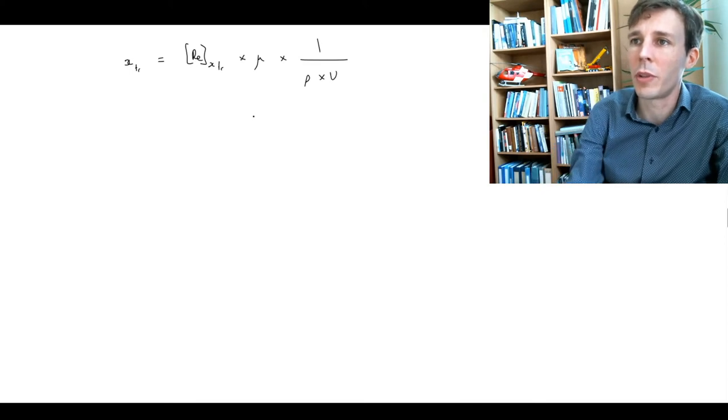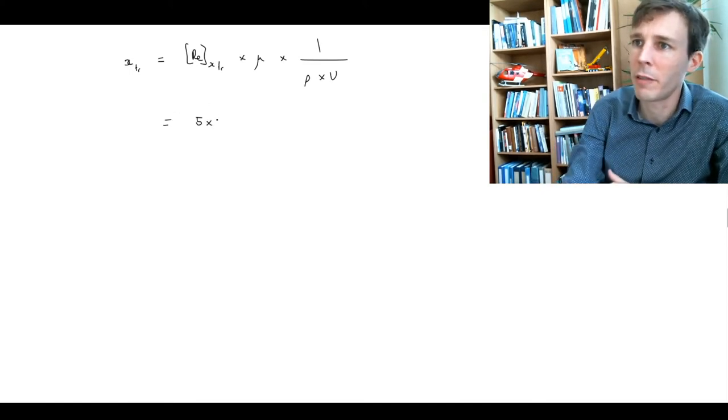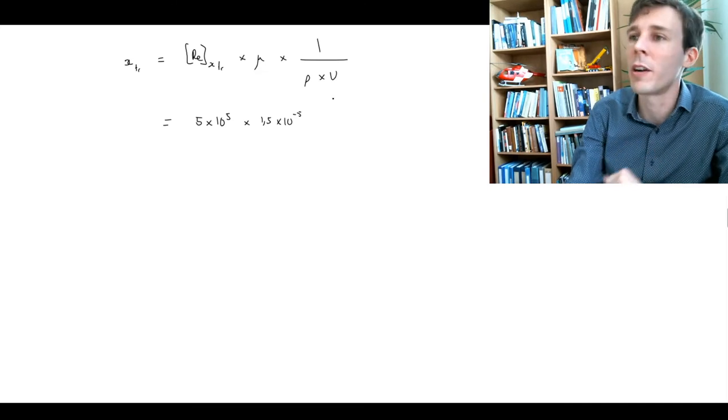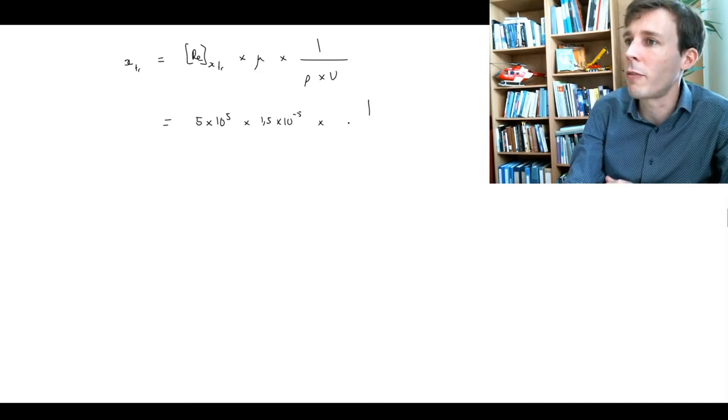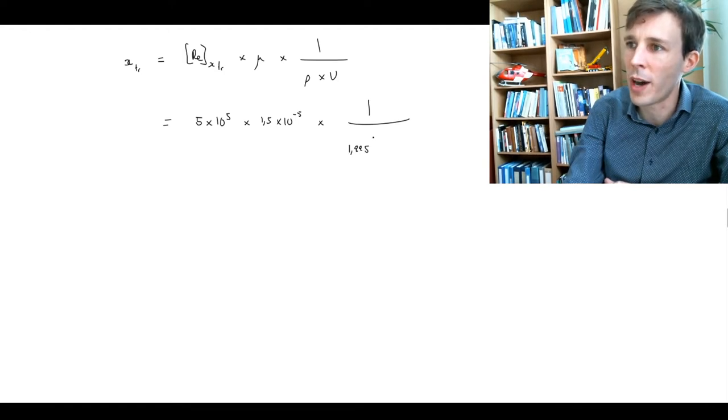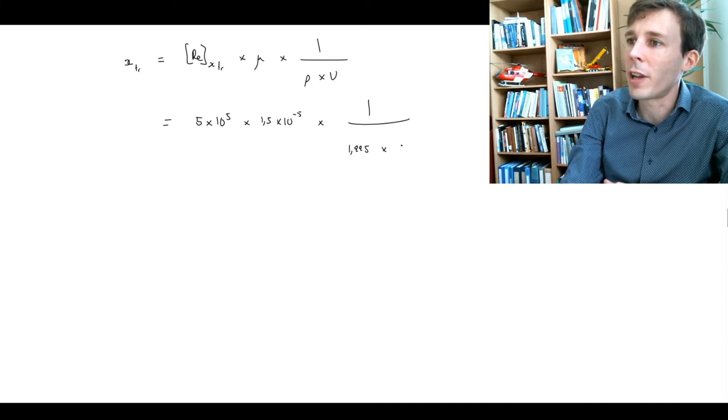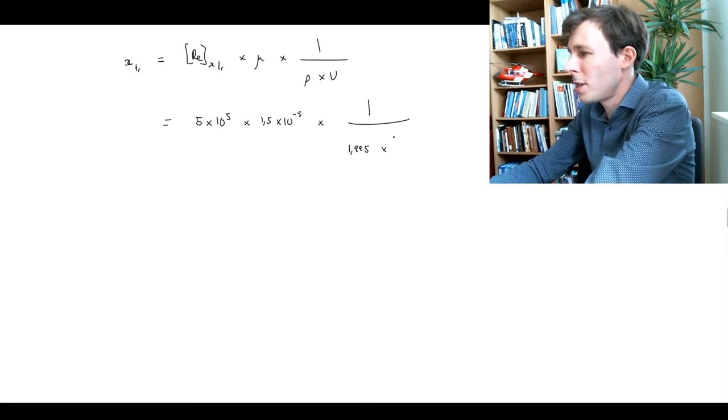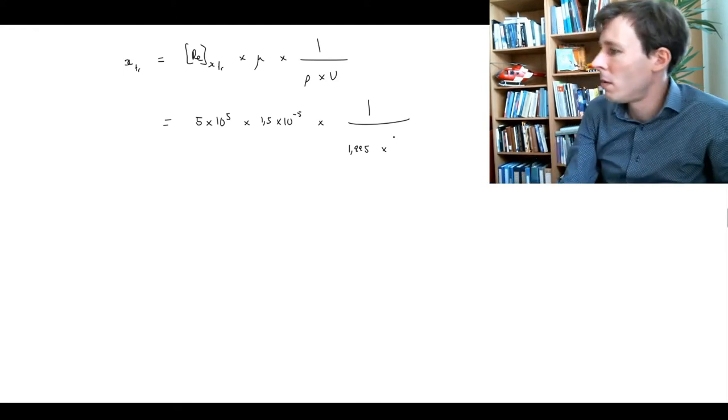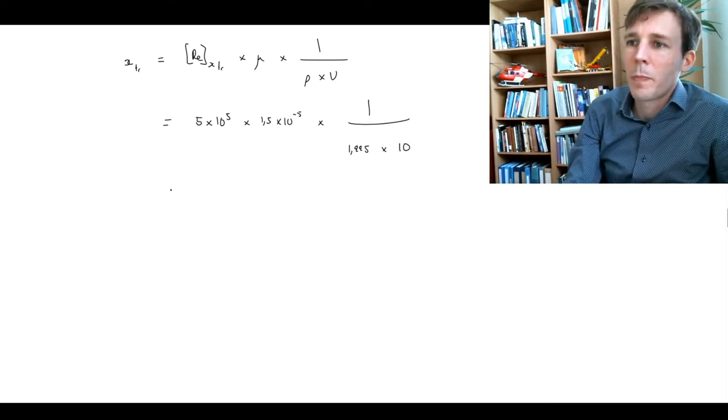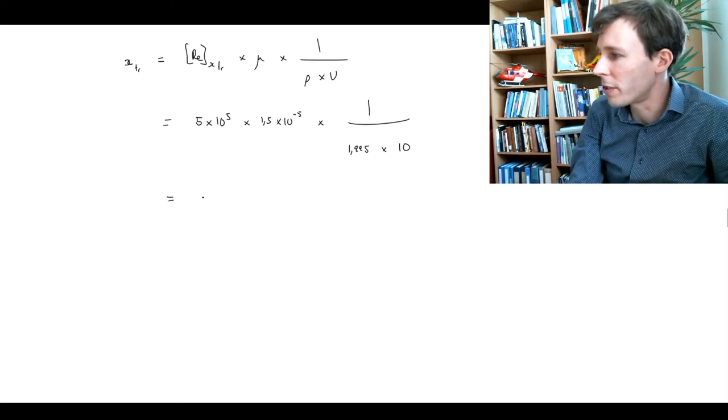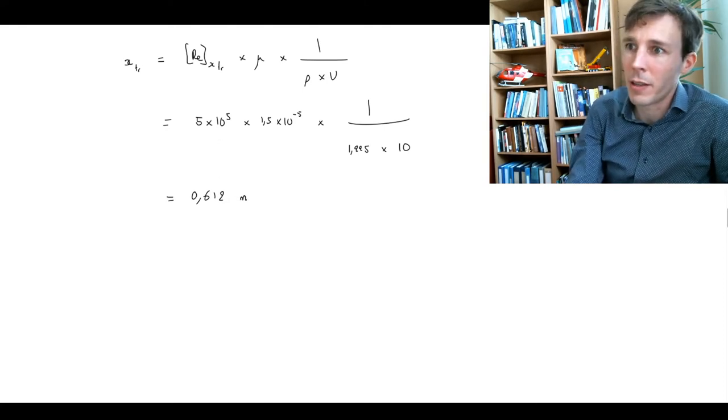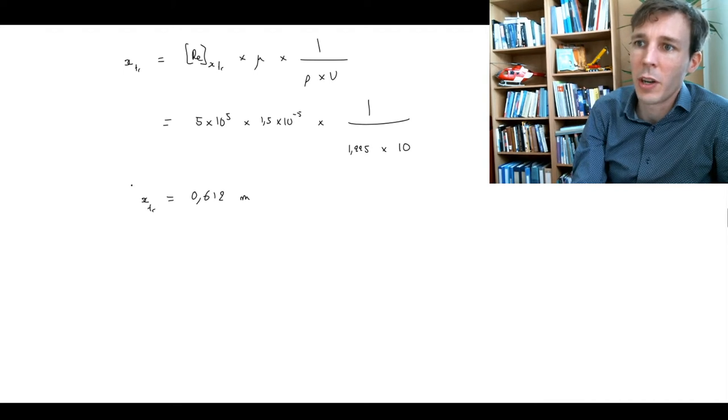And if we now put numbers into this, then we're going to get, here is half million, 5 times 10 to the power 5, approximately. The viscosity is 1.5 times 10 to the power minus 5 for air, in this case, at this temperature. And then we have 1 over the density of air, which is 1.225 kilograms per meter cube. And the velocity of the car, which in this case happens to be 10 meters per second. And so we get, if you plug this into your calculator, you get something like 0.612. And this is a distance that we're calculating, so this is a distance in meters. The position of the transition point.